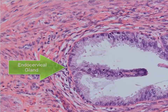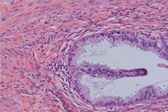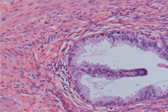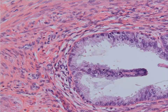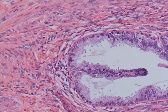You guys know all about the squamous dysplasia that can happen in the cervix. Well, HPV 16 and 18 also can infect the glandular cells. What you see here is actually a normal gland — at least half of it is. If you look at the part on the left, this is normal endocervical glandular type mucosa, and you can see there's a lot of ample pale blue cytoplasm.